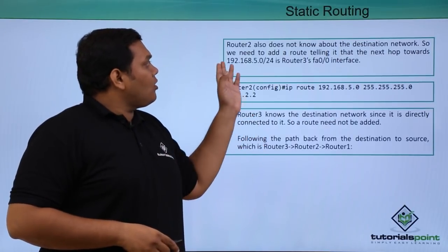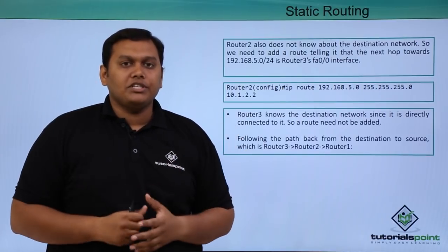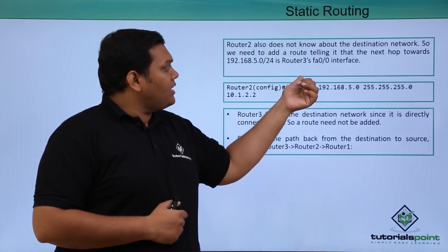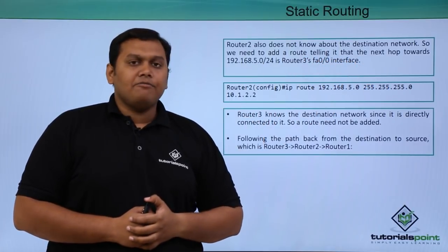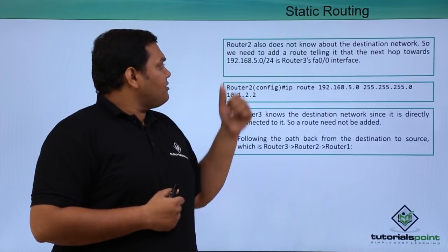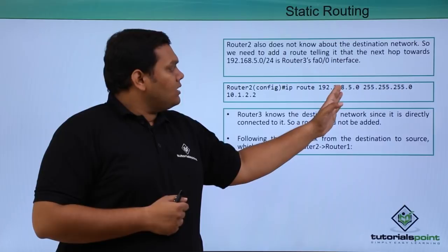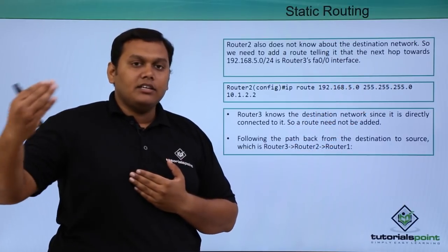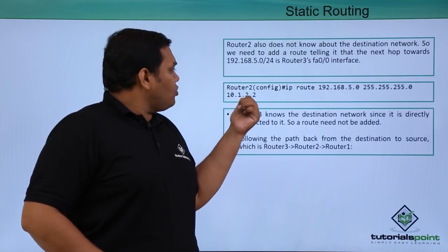After passing through Router 1, Router 2 also does not know about the destination network. So we add another manual route for Router 2, specifying the next hop towards Router 3's fa0/0 interface. We again write: IP route [destination IP address] [wildcard mask], and the exit interface is 10.1.2.2, directing traffic towards Router 3.